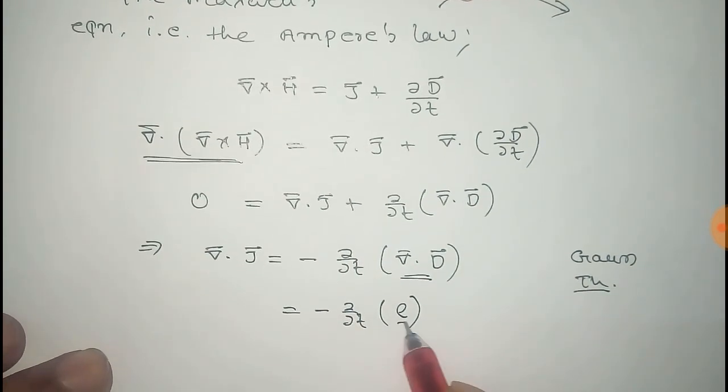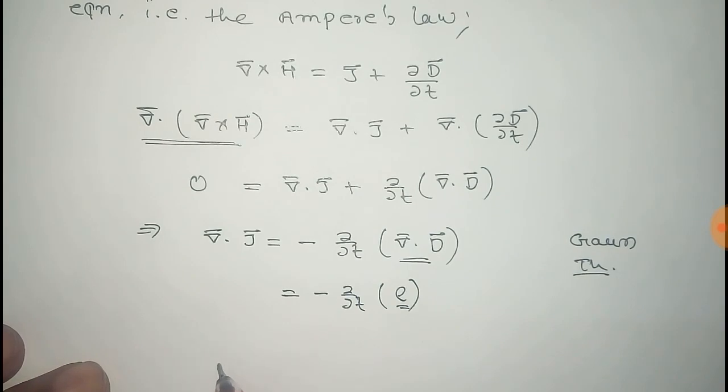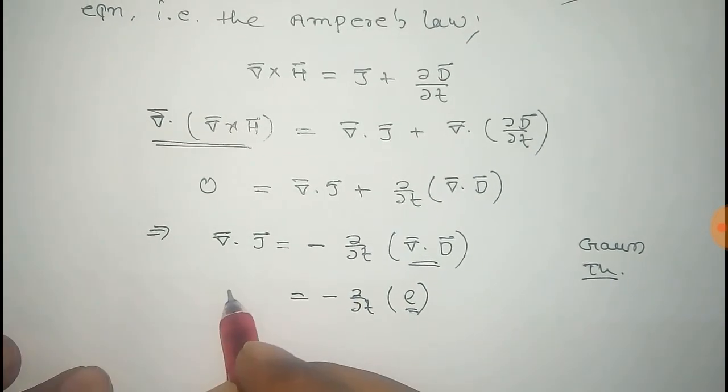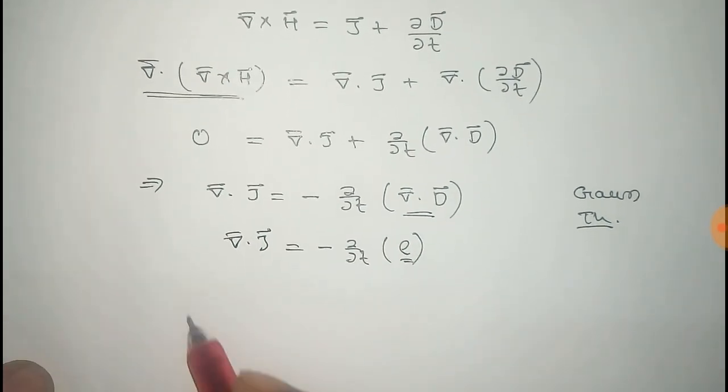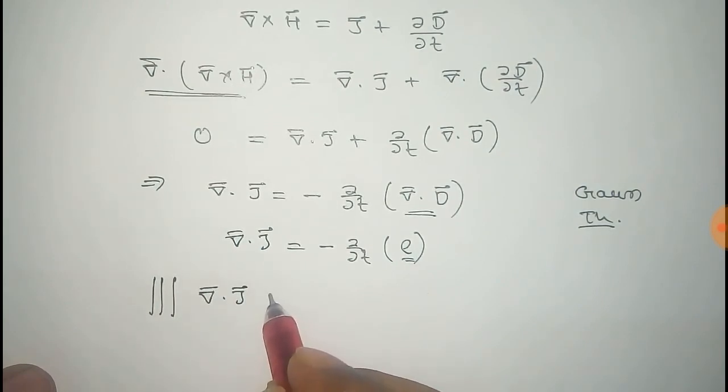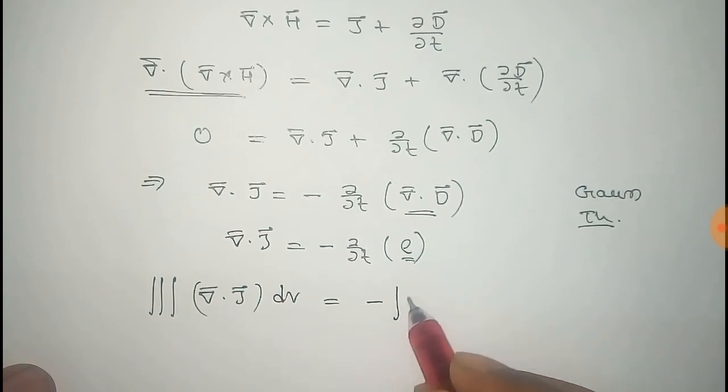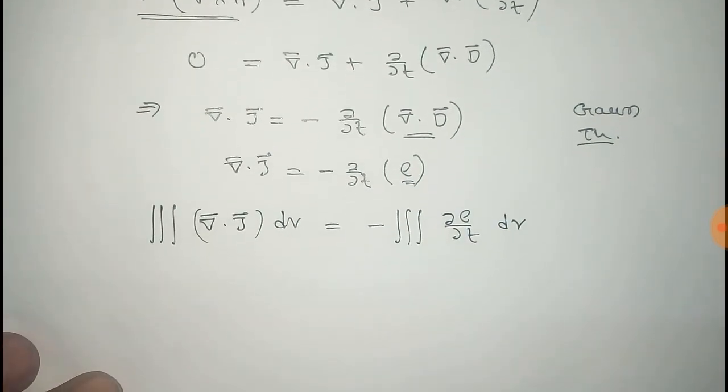Now, we take volume integral on both sides of this equation. That is, divergence of J dV is equal to minus del rho del T dV.